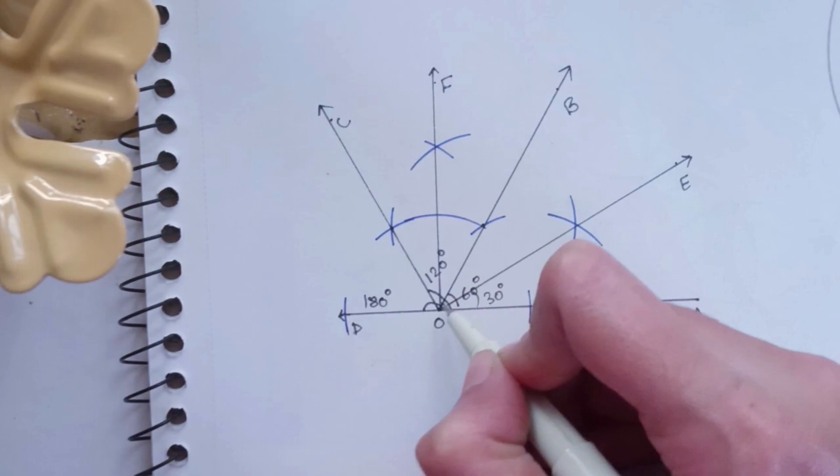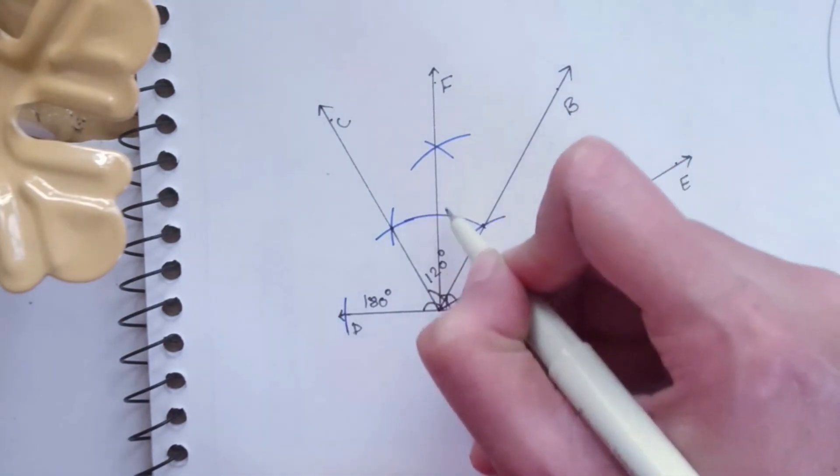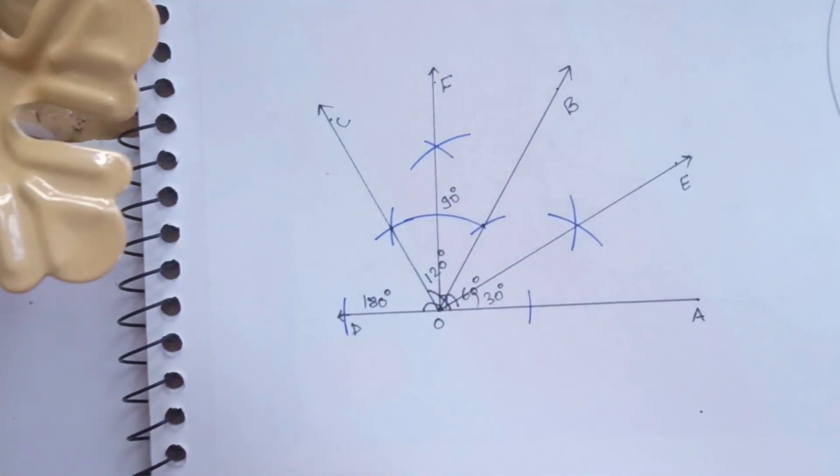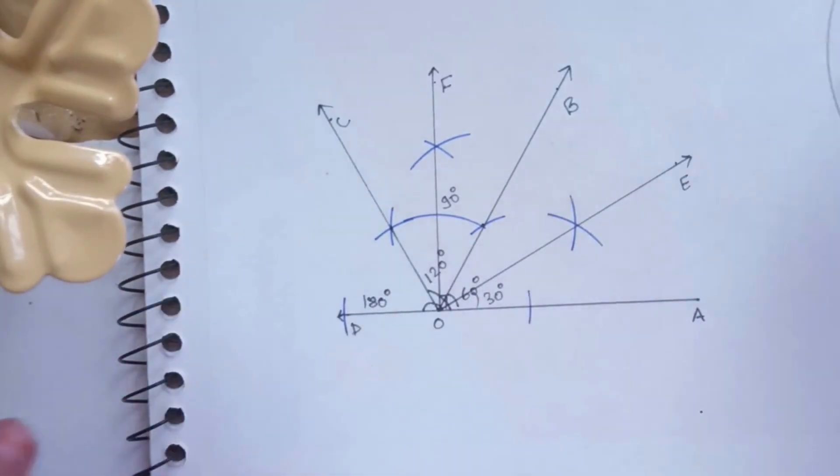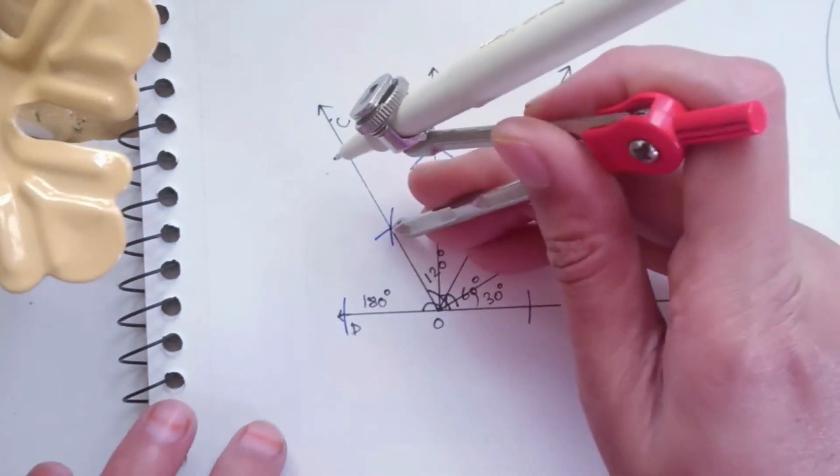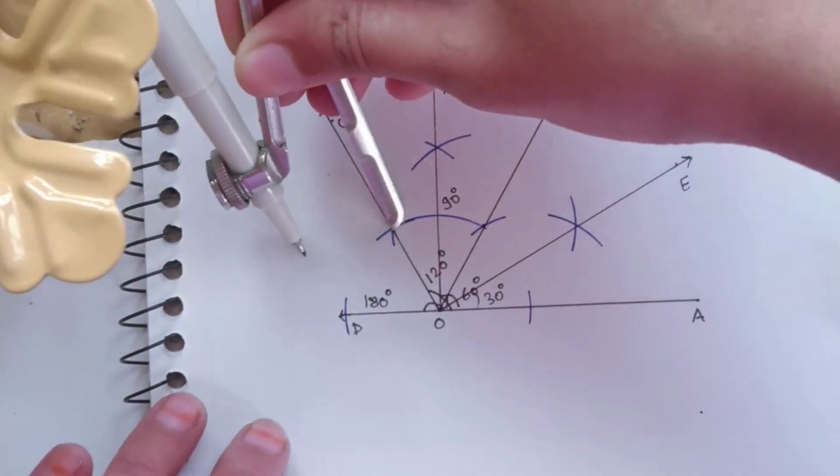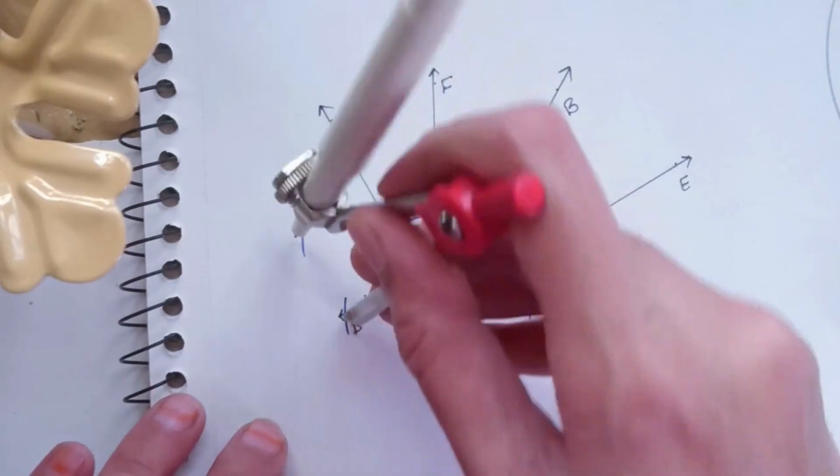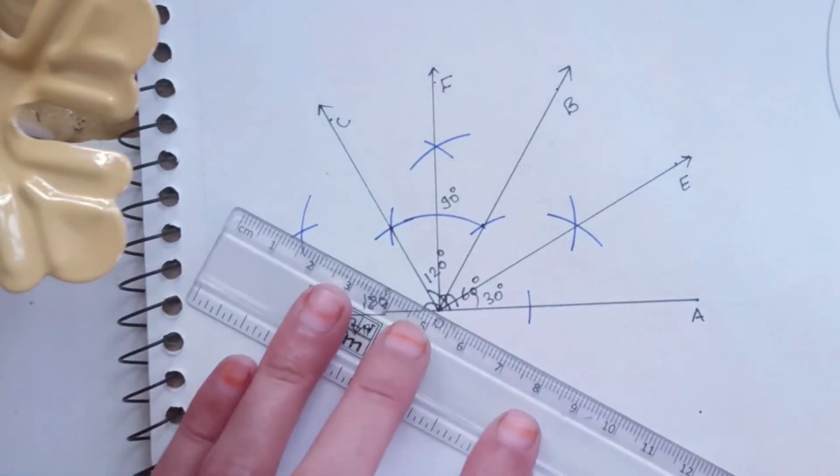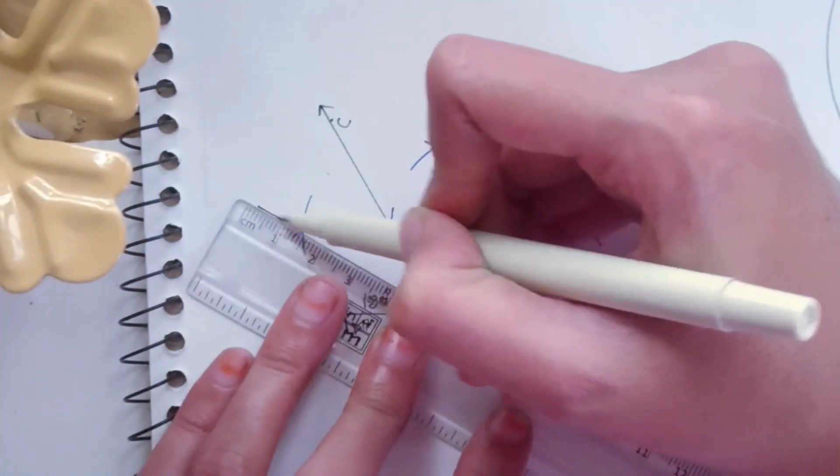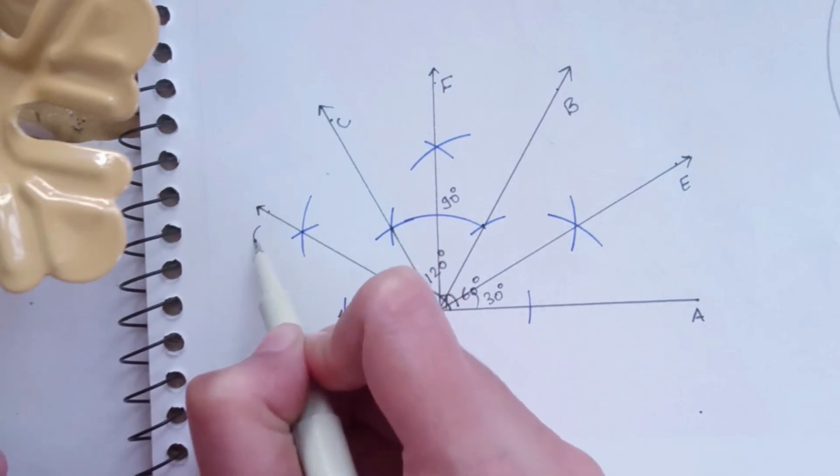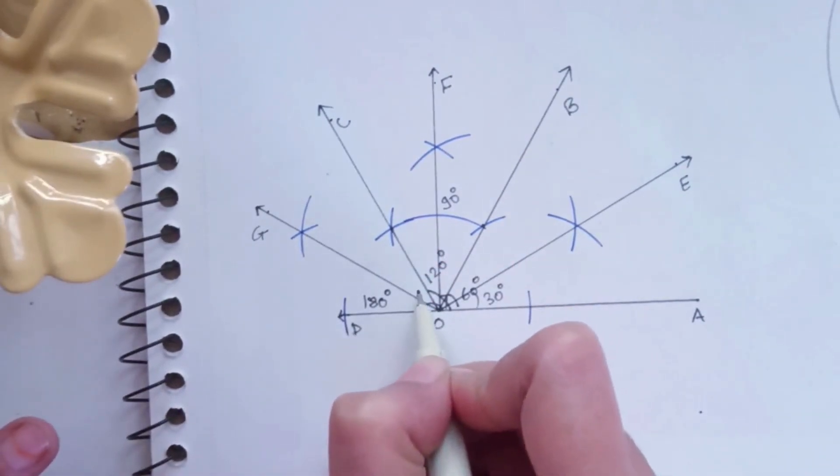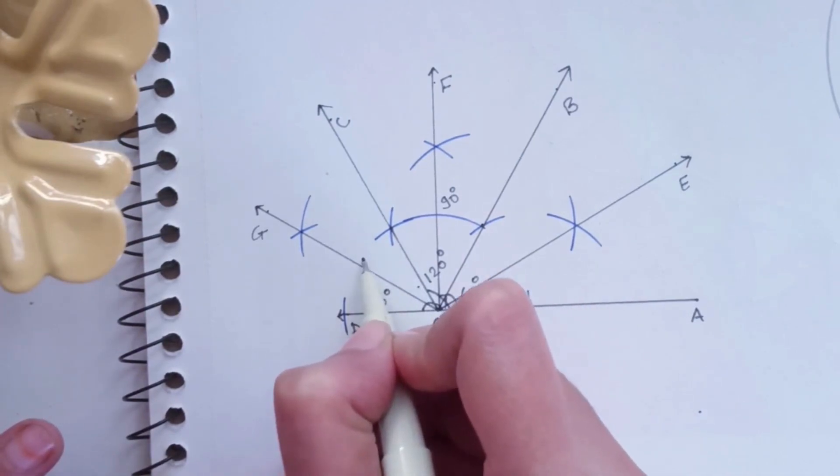Then to draw the 150 degree angle, perform the same procedure through lines OC and OD with intersecting arcs, and connect this intersection point with O. So this angle will become a 150 degrees angle.